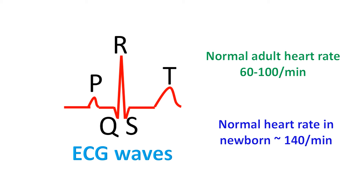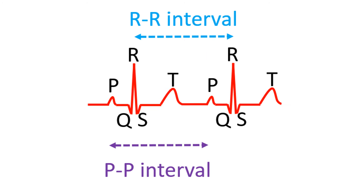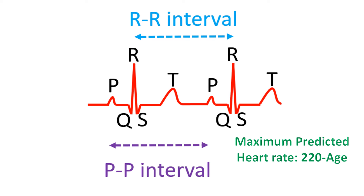Resting heart rate comes down gradually as age advances to reach the adult range. Heart rate goes up when you exercise, so the maximum predicted heart rate during exercise is 220 minus the age of the person. The heart rate is measured in ECG from the interval between two consecutive R waves — it is actually the rate of the lower chambers, or the ventricles. If the rate of the P waves is different from that of the R waves, it has to be measured separately from the PP interval. The rate of P waves gives the rate of the upper chambers.